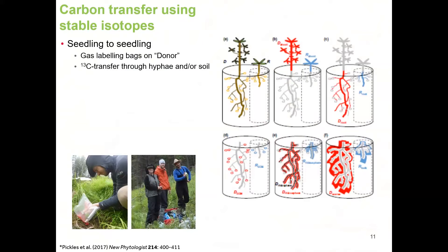How do we know that things are being transferred through mycorrhizal networks? I'll use an example from experiments I've been involved in. A lot of this work is done on seedlings because it's much easier to work with seedlings in controlled greenhouse conditions than with mature trees in the field. In this experiment, we have two seedlings in the same pot separated by a bag that either allows or blocks fungal hyphae from passing through — a bigger donor seedling and a smaller receiver seedling.